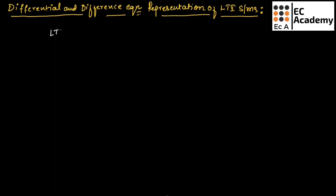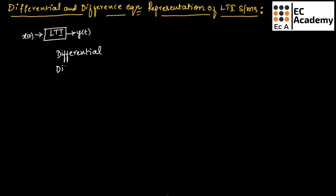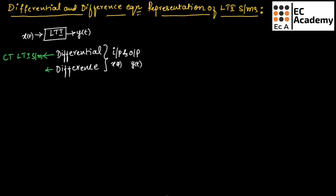To understand this, let us consider an LTI system with input x of t and output y of t. This system will have both a differential equation as well as a difference equation. These two equations consist of both input and output, where input is x of t and output is y of t. The differential equation is for the continuous time LTI system and the difference equation is for the discrete time LTI system.